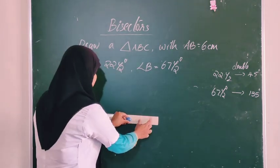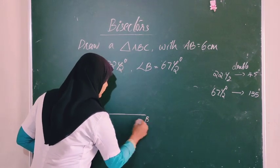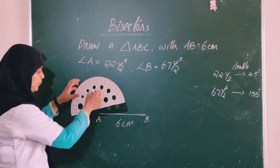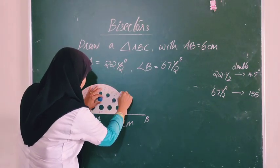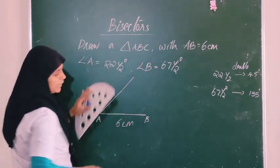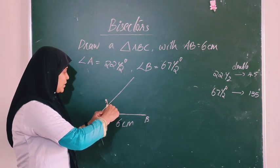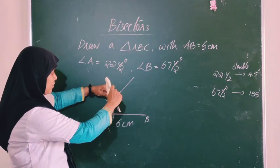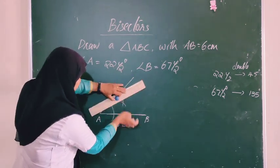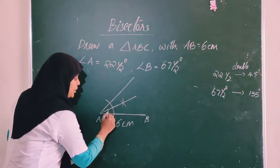First, draw AB equal to 6 centimeters. Then at angle A, we construct 22 and a half degrees using the angle bisector method — first drawing 45 degrees and then bisecting it. We join the lines to mark the 22 and a half degree angle at A.